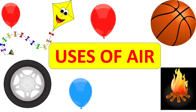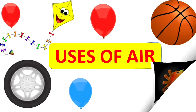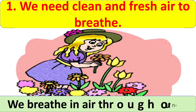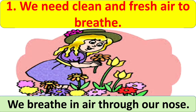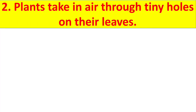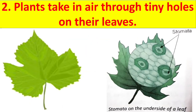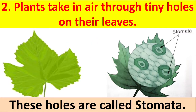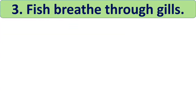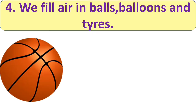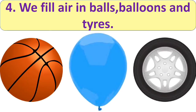Now let us see the uses of AIR. First, we need clean and fresh air to breathe, and we breathe in air through our nose. Plants take in air through tiny holes on their leaves, and these tiny holes are called stomata. Third, fish breathe through their gills. Next, we feel air in balls, balloons and tires.